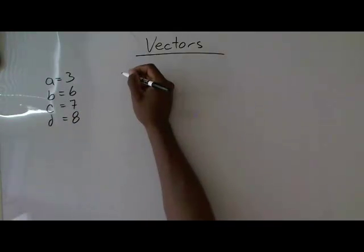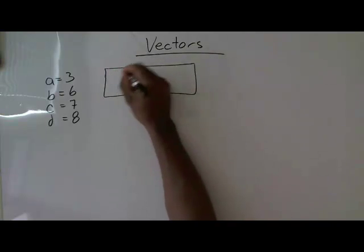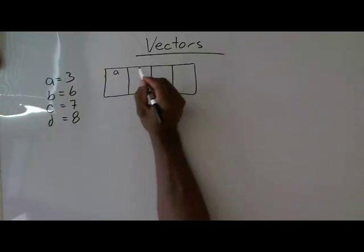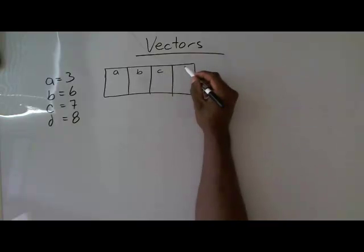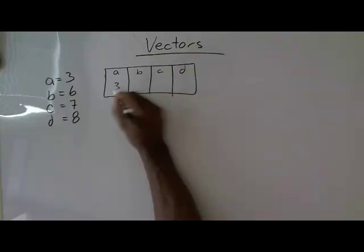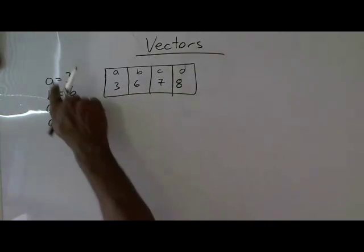If we look in memory, this is memory location that we've named A, this is memory location that we've named B, memory location that we've named C, memory location that we've named D. And these are the values that are in those memory locations because of these assignments here.